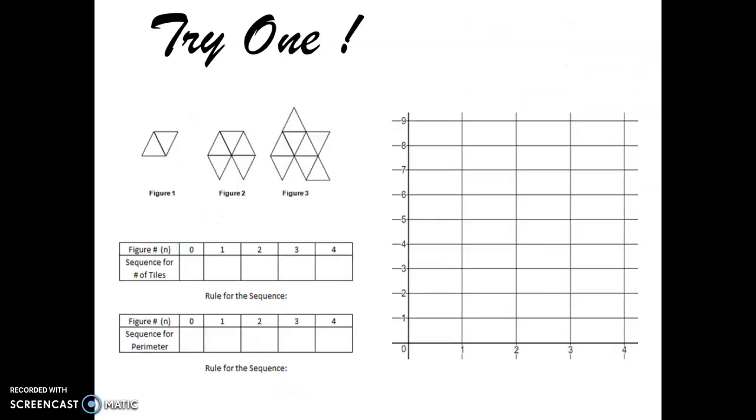Let's try one more. So try this one. This is the next one on your page. Let's see if you can follow the same process. Let's begin with the sequence for number of tiles. And what would you fill in here for zero, one, two, three, four? Okay. And also fill in the table now for the sequence for the perimeter.